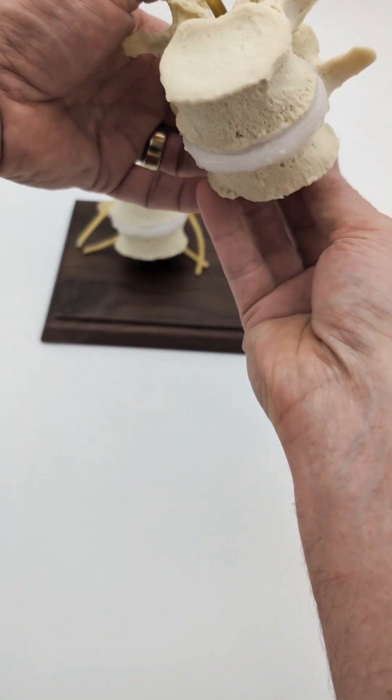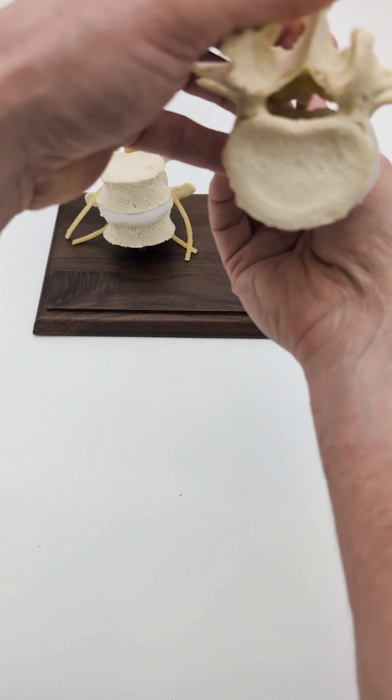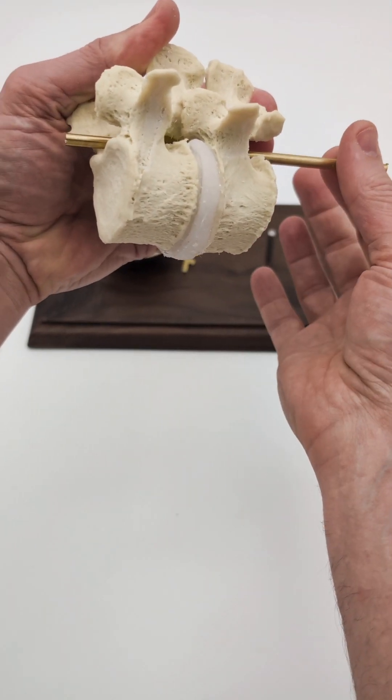Also in extension, you can see how it still has some friction here, bumping up against the thickened ligamentum flavum. But in extension, it gets even tighter.